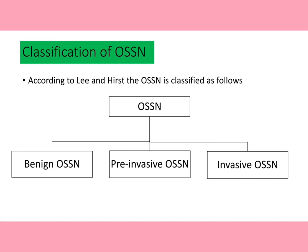The classification of OSSN according to Lee includes three types: benign, pre-invasive, and invasive OSSN. Another researcher, Jakobic, further classified conjunctival intraepithelial neoplasm or CIN into three parts — mild, moderate, and severe — depending on the severity of the lesion.